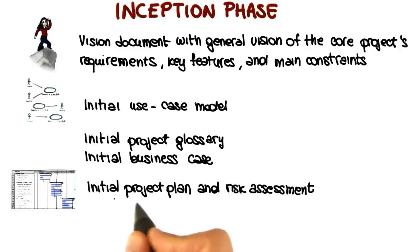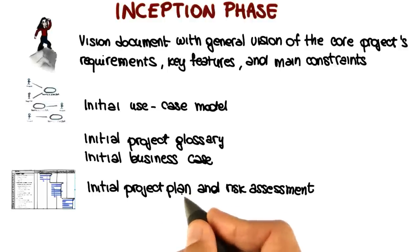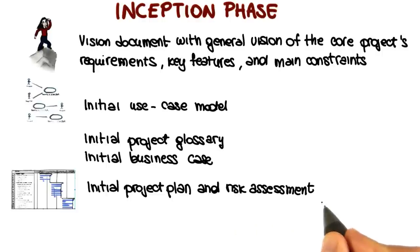Yet another deliverable for the inception phase is the initial project plan, which shows the phases, iterations, roles of the participants, schedule, and initial estimates. In addition, the inception phase also produces a risk assessment document, which describes the main risks and countermeasures for these risks.